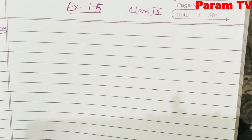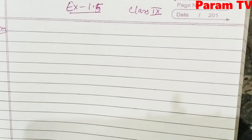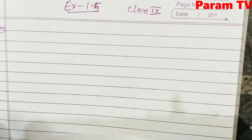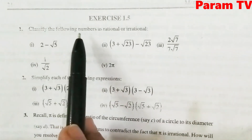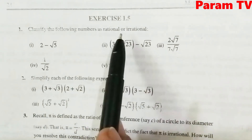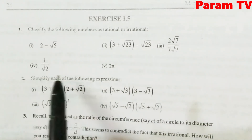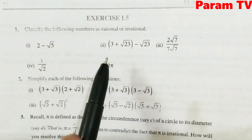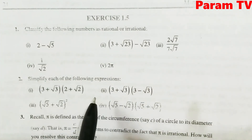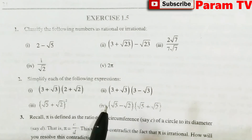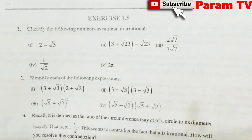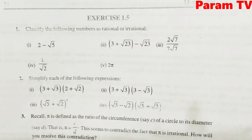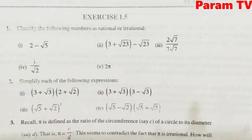Hello everyone, let us start Exercise 1.5, Chapter 1 — Number System for Class 9. The first question is: classify the following numbers as rational or irrational. As explained in previous exercises, numbers that can be written in P/Q form are rational, and those that cannot are irrational. Let's start doing it.